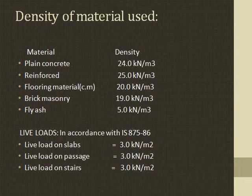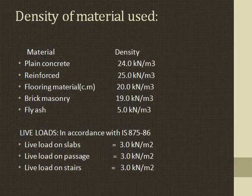Density of materials: plain concrete is 24 kN/m³, reinforced concrete is 25 kN/m³, floor material is 20 kN/m³, brick masonry is 19 kN/m³, and fly ash is 5 kN/m³. Live loads are in accordance with IS 875-1986. Live load on slab is taken as 3 kN/m², live load on passage is 3 kN/m², and live load on stair is also 3 kN/m².